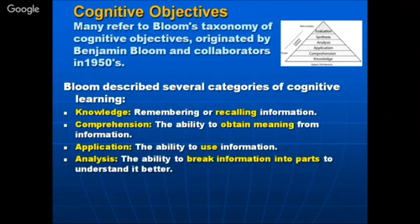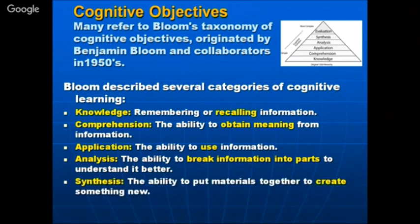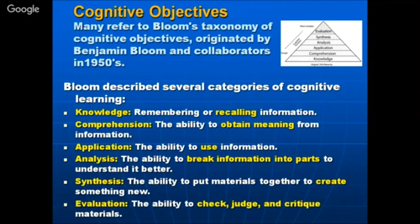The fourth level is analysis — breaking information into parts to understand it better. At the fifth level, synthesis — he is able to create something new by putting things together, first breaking the information through analysis, then creating new knowledge. The highest stage according to Bloom was evaluation — the ability to check, judge, or criticize material; to make a judgment on whether a theory is right and under what boundary conditions it holds.